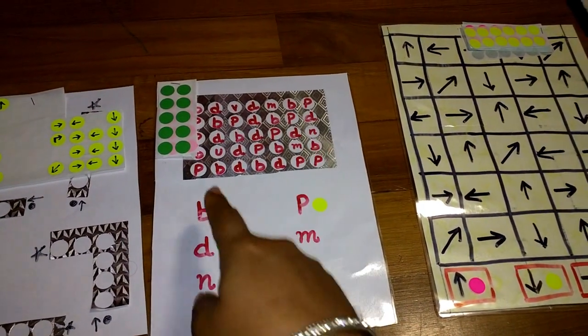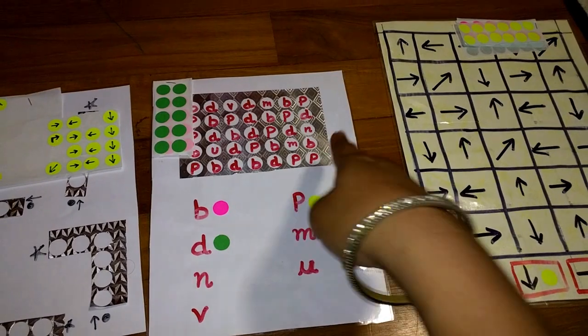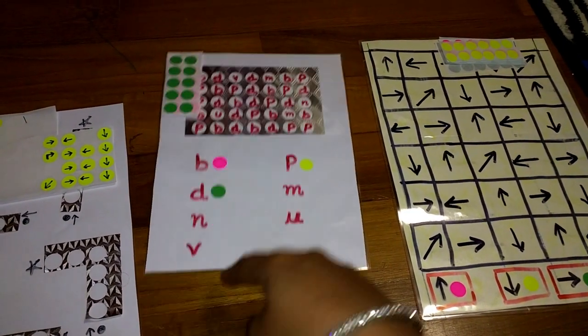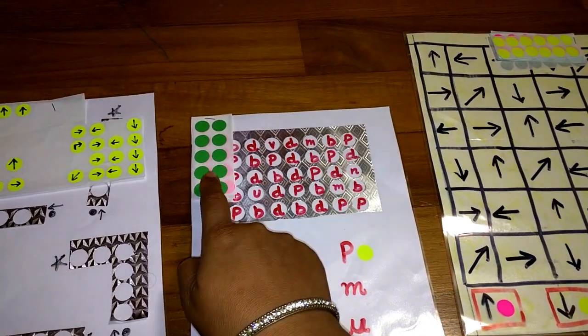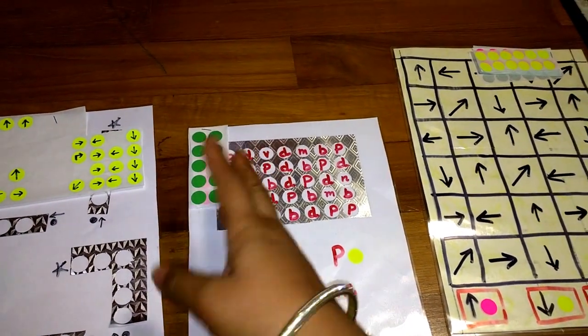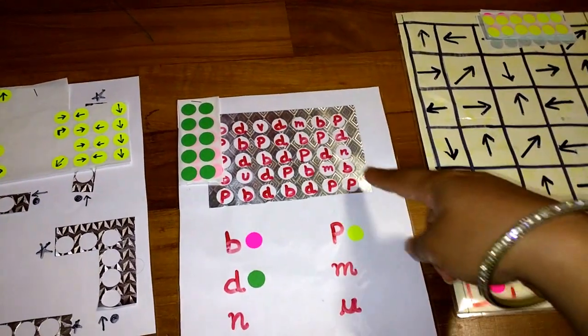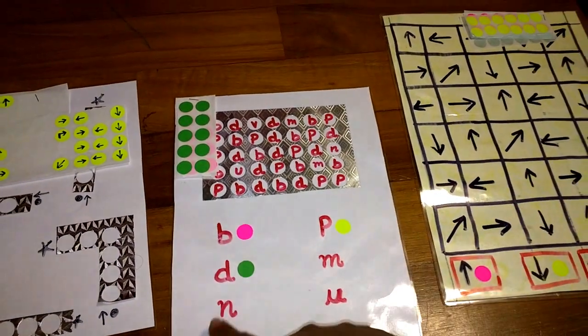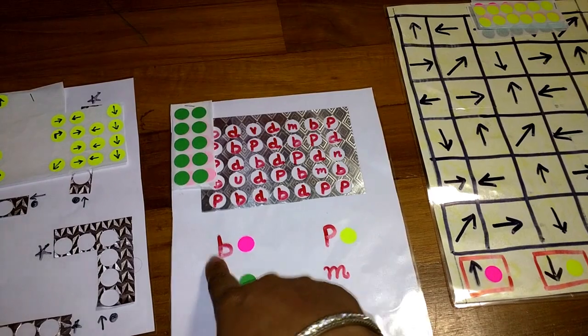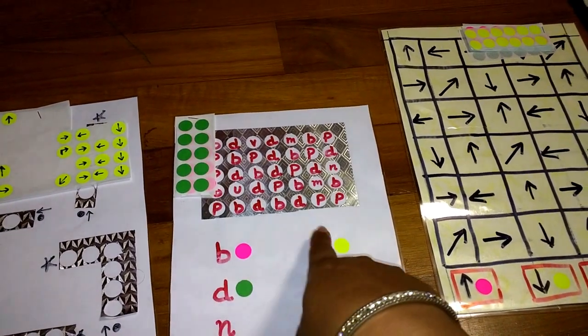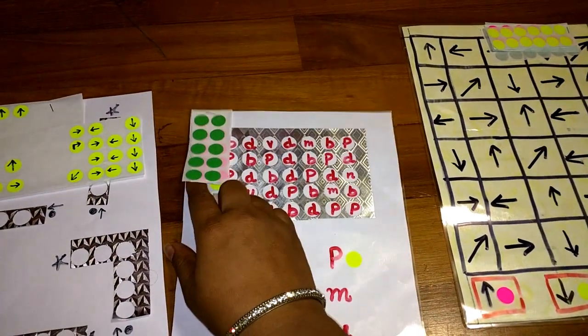Because my four-year-old still gets confused with B and P, I just wrote different alphabets inside it to create confusion. These are very smart kids—they know that mama has given 12 or 10 stickers that will definitely fit somewhere. That's why I have created random alphabets also which will not have any sticker. So again, she has to recognize this B and put pink, D green, N yellow, and so on.